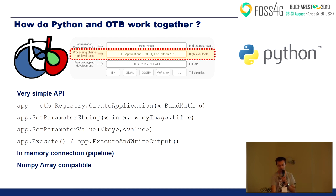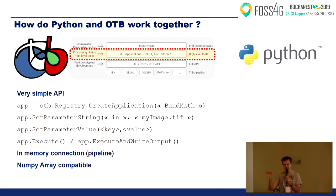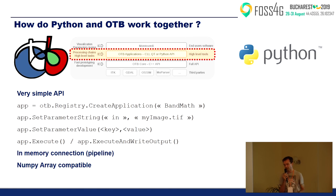To do that in Python, you just call execute on the applications. At that time, Orfeo Toolbox connects the pipelines and tells the different applications where to take data from and where to feed results. At the very end, you call execute and write output on your last application, and it writes down the final image to disk. This is in-memory connection.